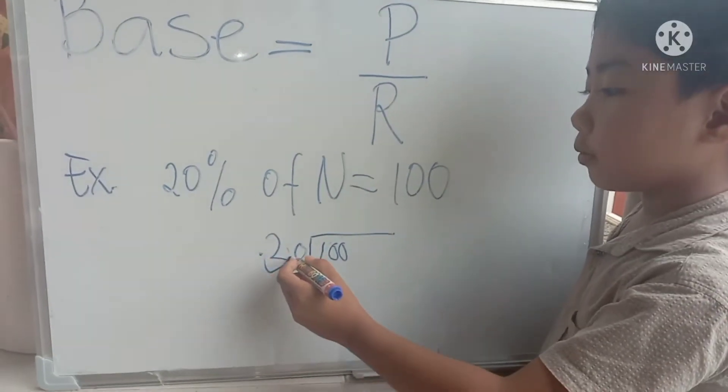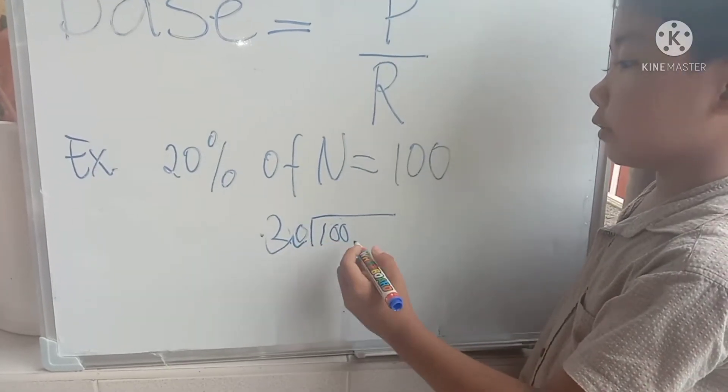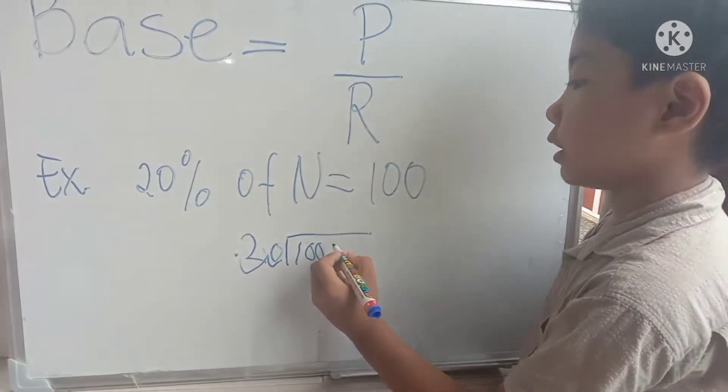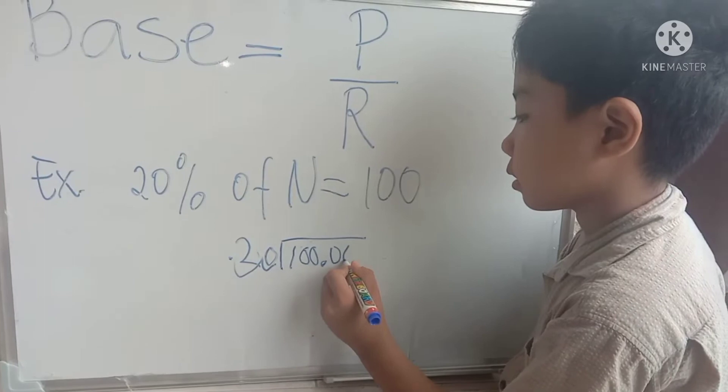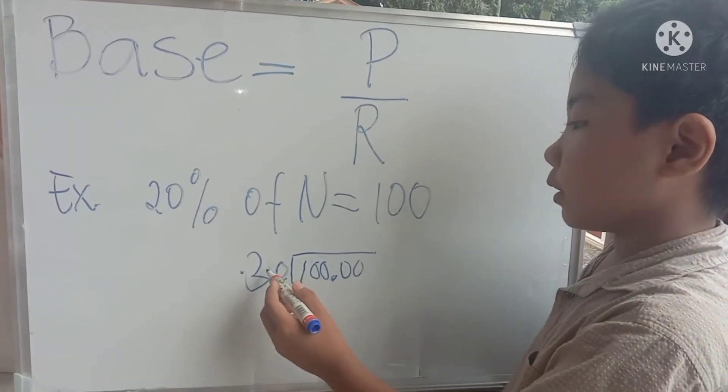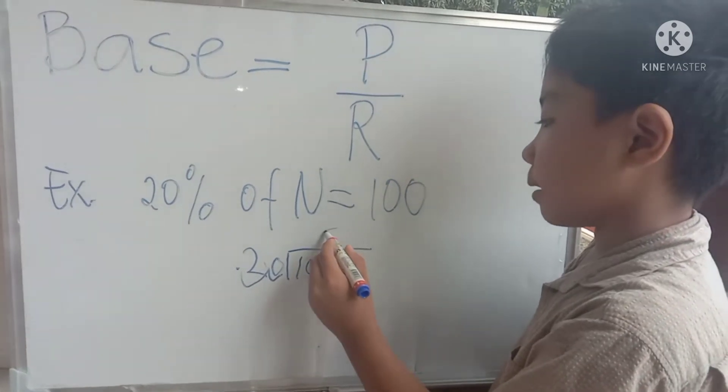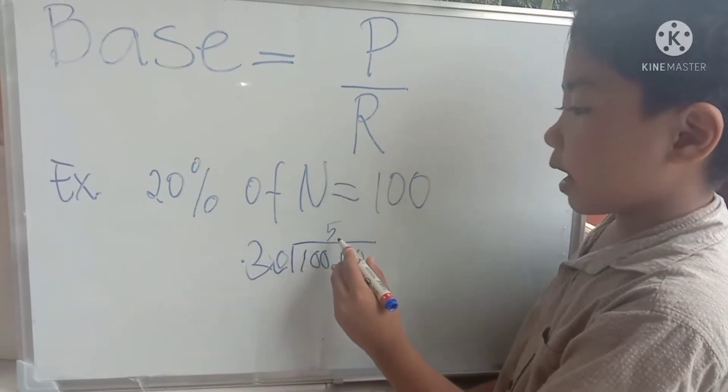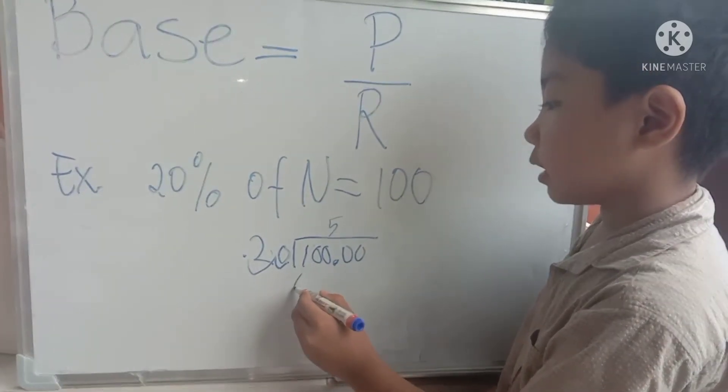Move the decimal point two places to the right. Add two zeros. 100 divided by 20 equals 5. 5 times 20 equals 100.